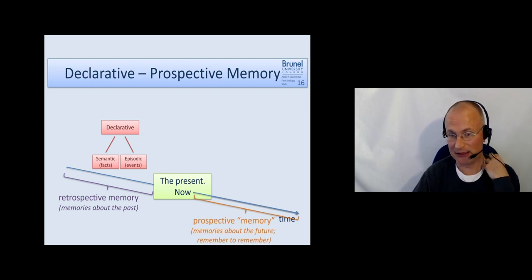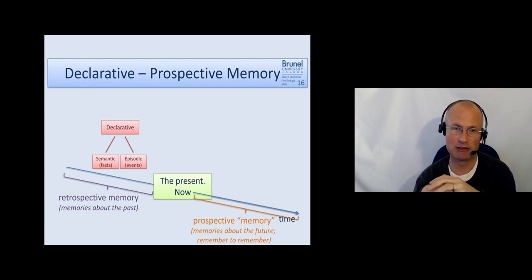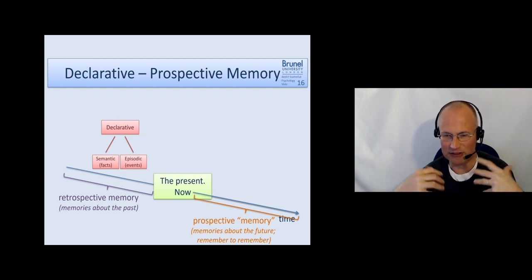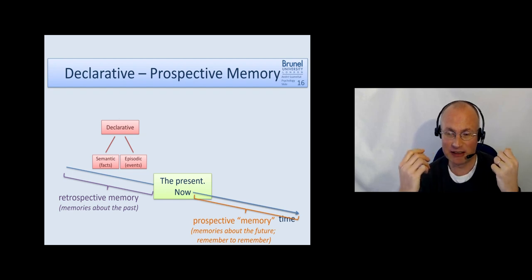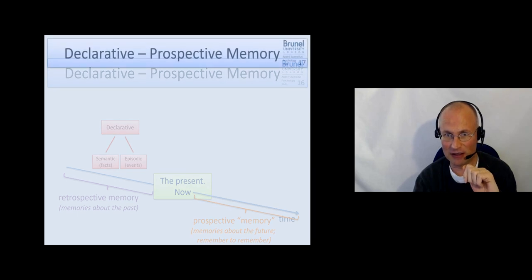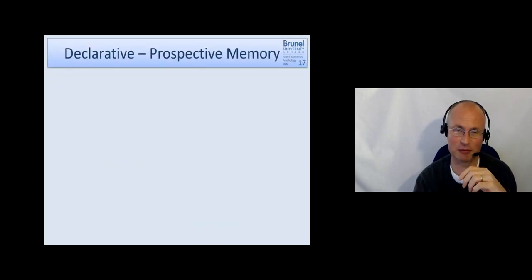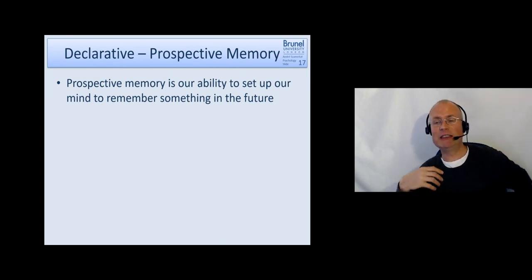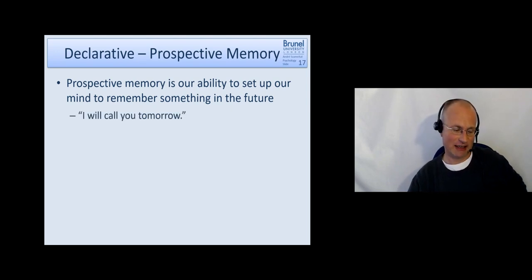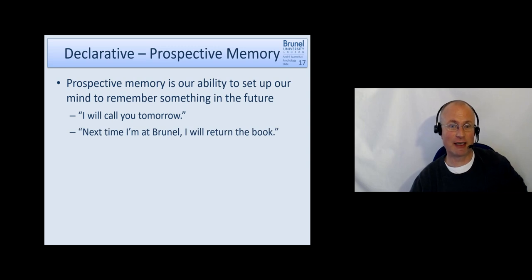Prospective memory is memories about the future, but this sounds a little bit silly. So a different way to phrase it: prospective memory is our ability to remember to remember something. It's our ability to set up our mind to remember something in the future. Examples are 'I will call you tomorrow' or 'next time I'm at uni, I will return the book to the library.'